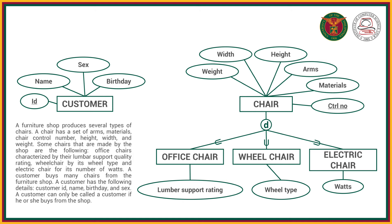Based on the problem, a customer buys chairs — many chairs from the furniture shop — so that is a one-to-many cardinality. And a customer can only be called a customer if he or she buys from the shop, so a customer has total participation in this relationship.